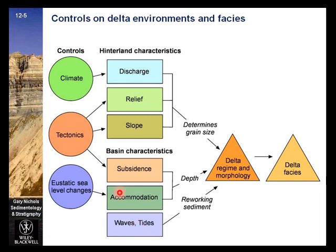Climate affects discharge mainly through the amount and intensity of precipitation. Tectonics influences the relief and slope as well as the basin characteristics. Hinterland characteristics determine grain size supplied to a delta, which in turn will reflect the regime and morphology. Delta phases vary depending on delta regime and morphology.